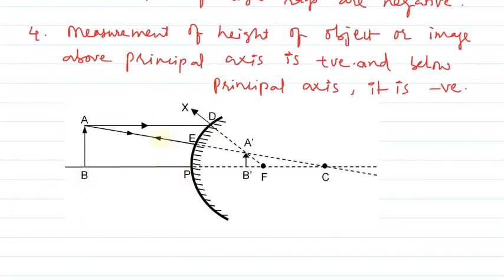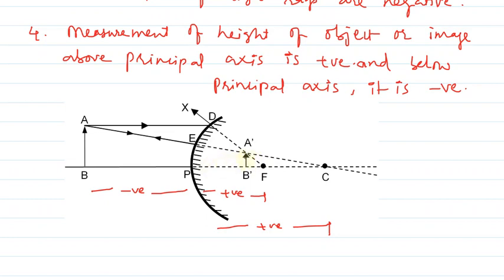Looking at the diagram: object distance is measured opposite to the direction of light rays from the pole, so object distance is negative. Focal length is measured along the direction of light rays, so it is positive. Radius of curvature is also along the direction of light rays, so image distance, focal length, and radius of curvature are all positive.